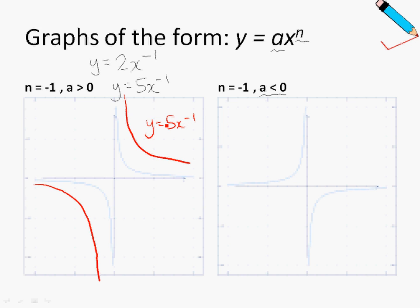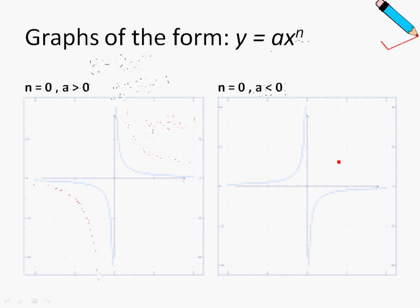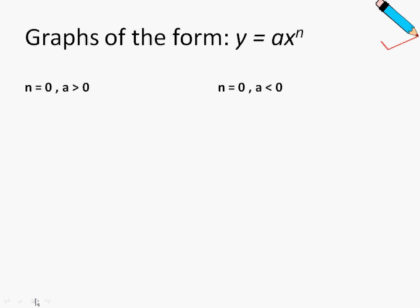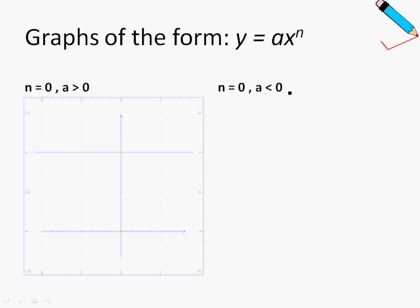In the next few slides I will show you how the graph changes when the values of n change, for both positive and negative a. Note that graphs for positive a will always be a mirror reflection of graphs for negative a along the x-axis. Now, when n equals 0 and a is positive, the graph will look like this — the blue line on screen. When a is negative, it is a reflection along the x-axis.